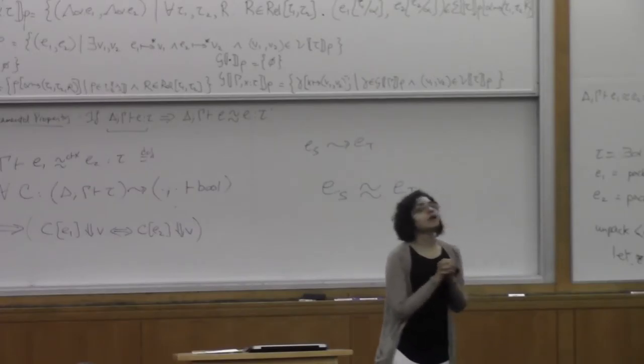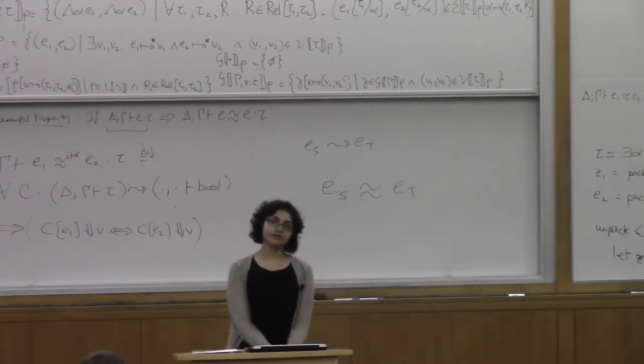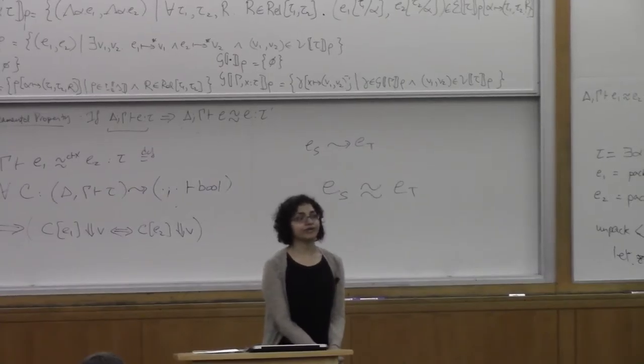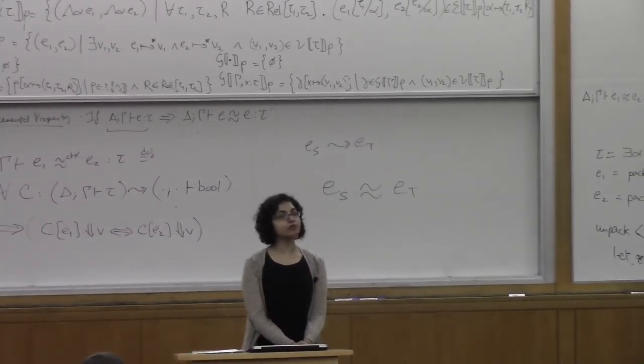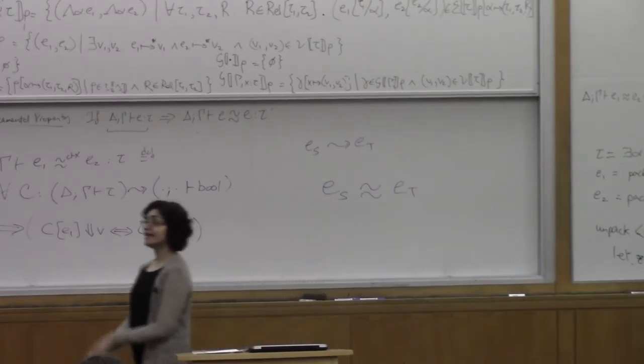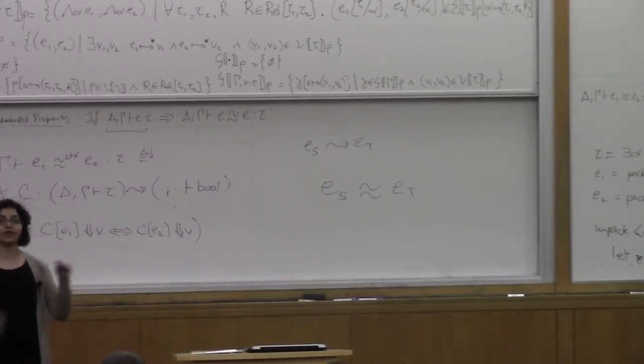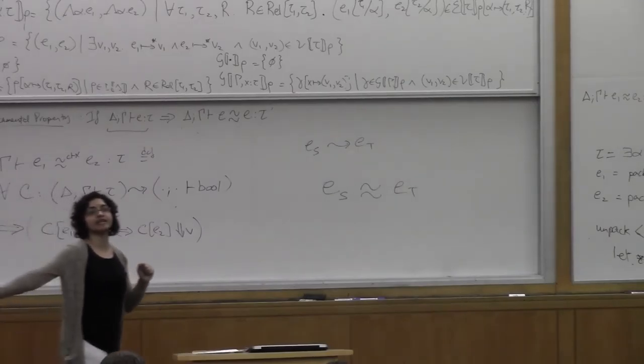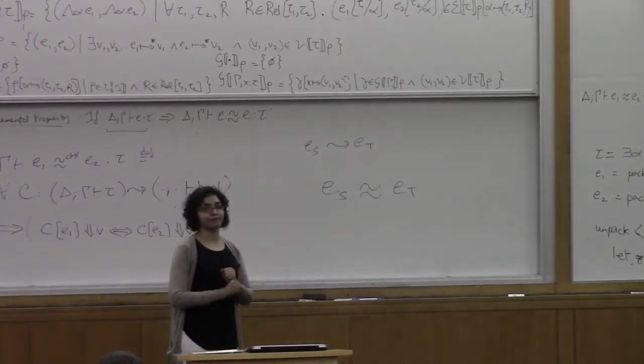Comcert proves compiler correctness for whole programs. It says that if you compile a whole program, then my theorem guarantees that when you run the source program, you get the same thing as when you run the target program.